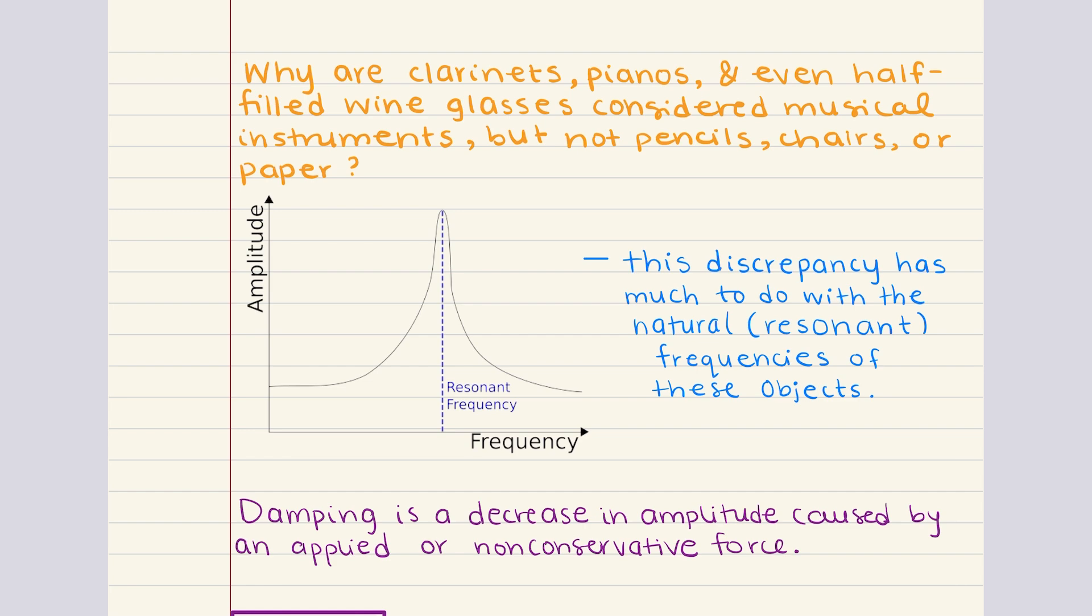Every object has a natural frequency. This is the frequency at which it naturally oscillates when disturbed. And this depends on factors like the object's size, shape, and material. So, for example, guitar strings, they vibrate at specific frequencies that correspond to the notes we hear.